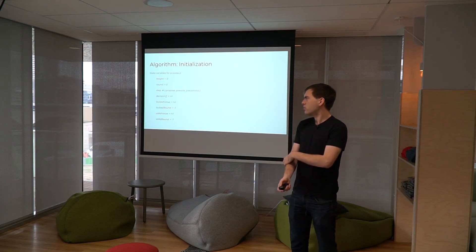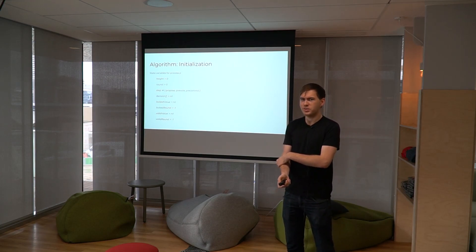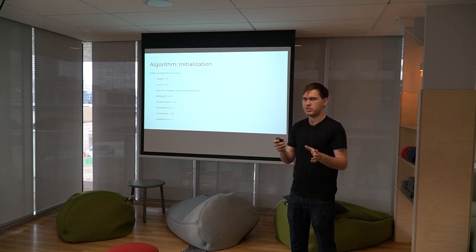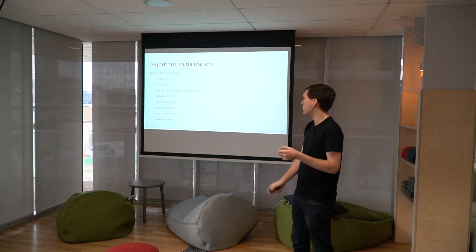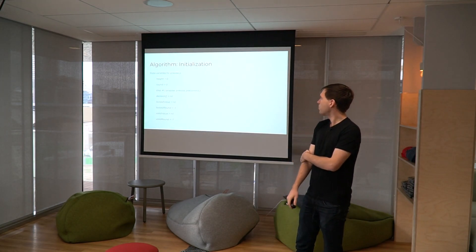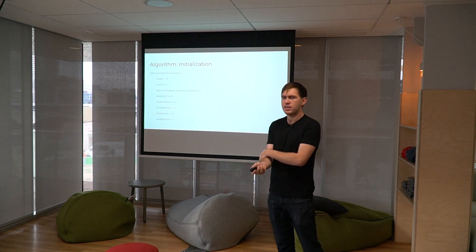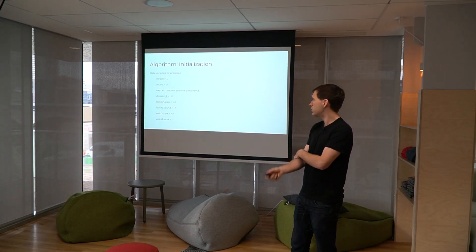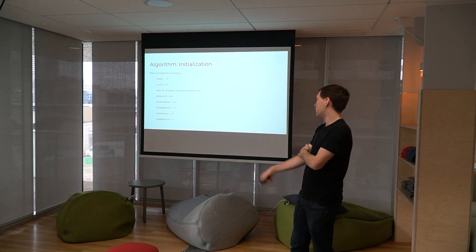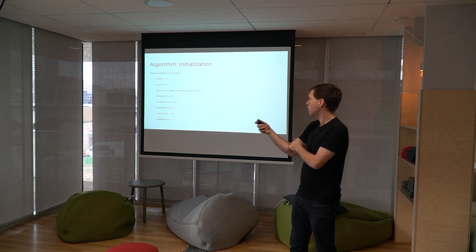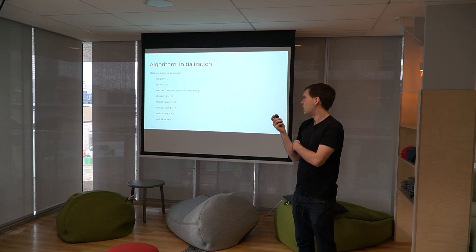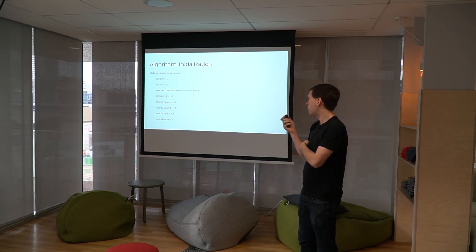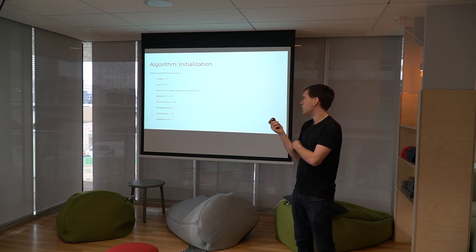I'm going to run through the state machine — please feel free to stop me and ask questions. For each process P, for some consensus instance at a new height, we initialize state as follows: set height to the new height, round to zero, step initially to nil, and decision values. We also have four variables: locked value, locked round, valid value, and valid round.